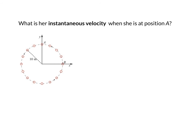And finally, we can ask, what is Wendy's instantaneous velocity when she is at position A? Remembering the definition of instantaneous velocity, you can think of it as a speed plus a direction.